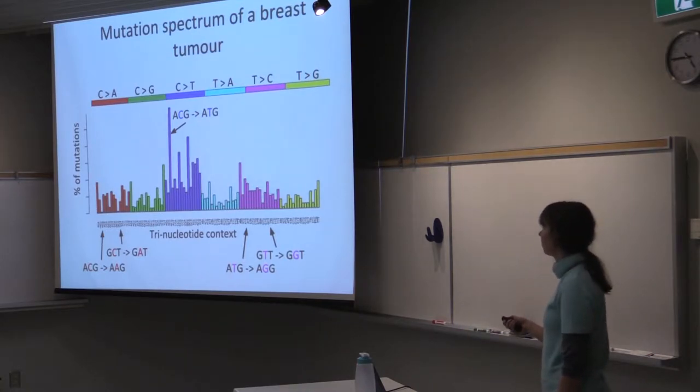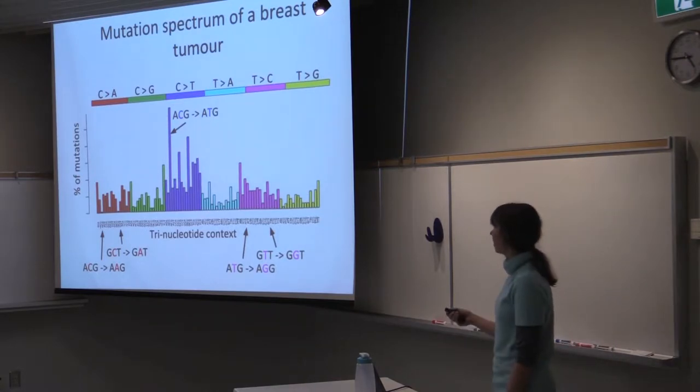We have the histogram over these 96 types. On the y-axis, we have the percentage of mutations that belong to the particular type. And this histogram is for one breast cancer tumor. We primarily see C2T mutations here.